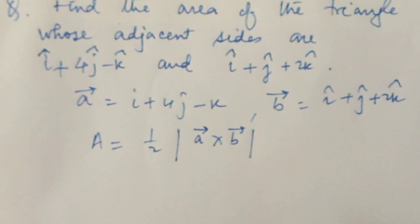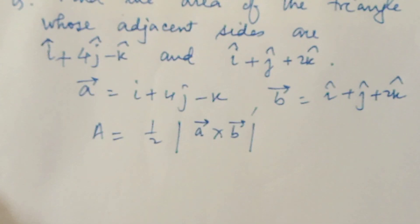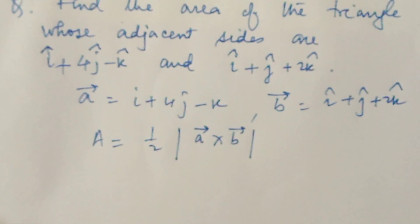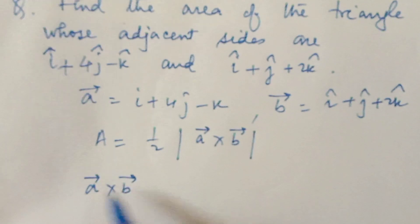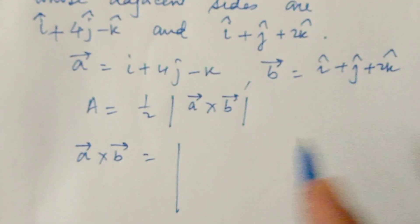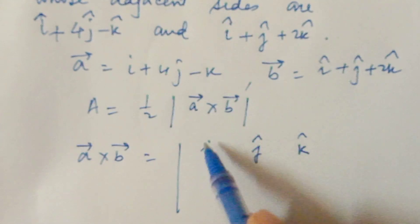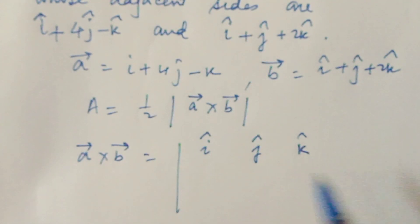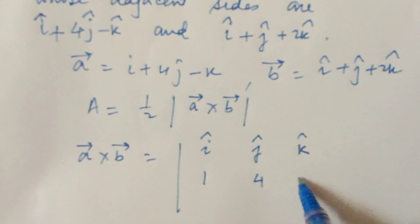Sometimes the vertices will be given, then you can find the position vector and the vector of the side. But here the sides are directly given, so we proceed like this. We have to find a cross b first — the vector product — by arranging it in determinant form.